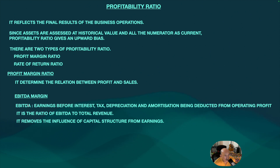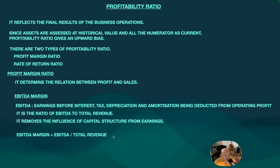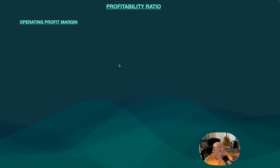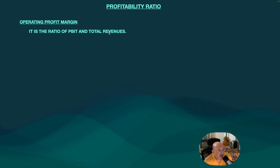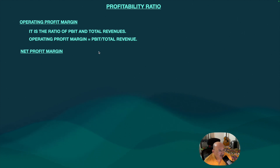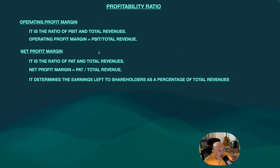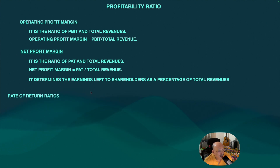EBITDA margin is EBITDA divided by total revenue — total revenue can also be considered as total sales. Operating profit margin is the ratio of EBITDA to total revenues. Net profit margin is profit after tax divided by total revenue. Net profit margin determines the earnings left for shareholders as a percentage of total revenue — very important for equity shareholders.